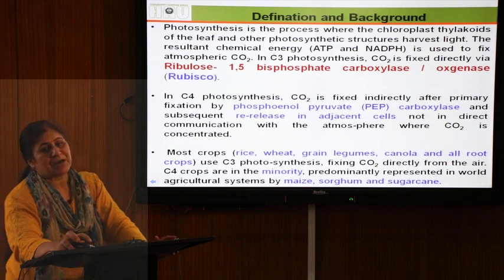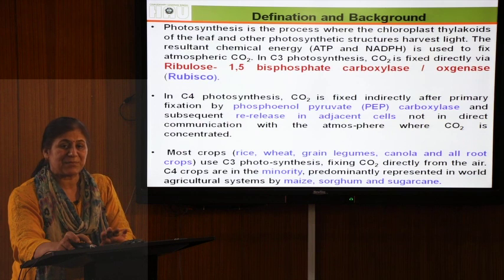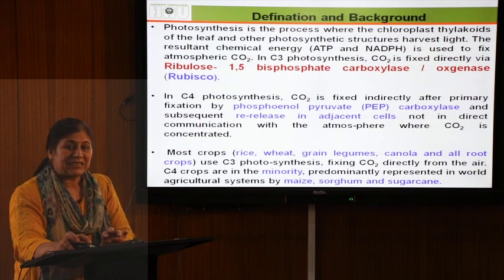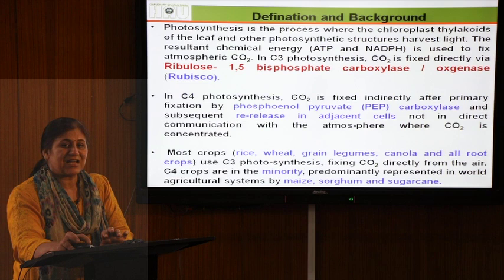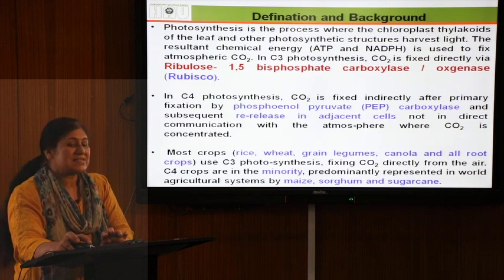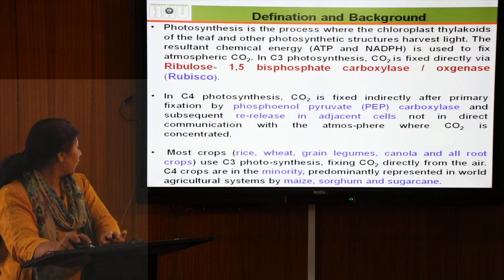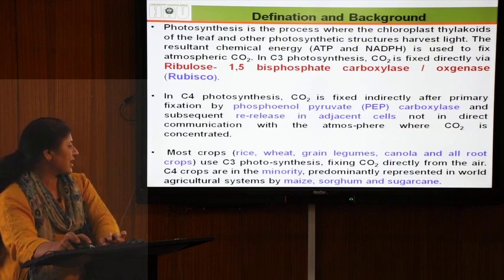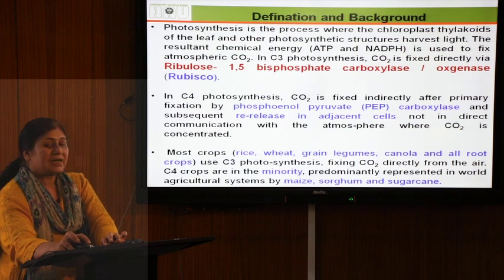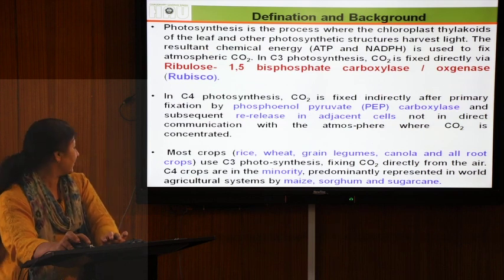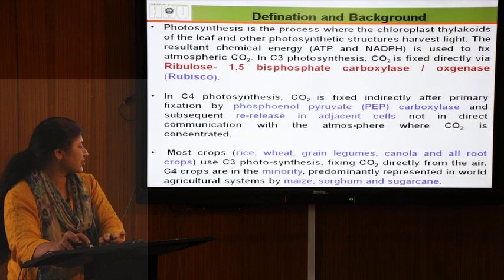PEP carboxylase first fixes carbon dioxide and then re-releases it into adjacent cells, thereby increasing the local CO2 concentration. Due to this high CO2 concentration, rubisco efficiency is increased. Most crops like rice, wheat, grain, legumes, canola, and root crops use the C3 photosynthetic mechanism, fixing CO2 directly from the air. C4 plants are in the minority — the major ones being maize, sorghum, and sugarcane.